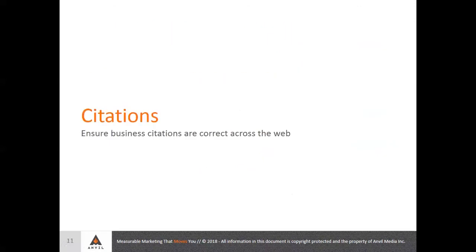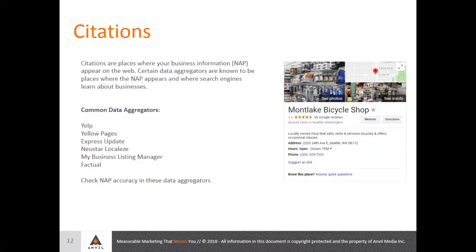Next we'll be talking about citations. So what is a citation? A citation is really anywhere on the web that includes your name, address, and phone number. This can be on your website or on another website. But mostly when we're thinking about citations, we're thinking about data aggregators. If you don't have a complete or up-to-date Google My Business listing, Google scrapes data aggregators and uses that information to present in a knowledge panel with regards to your business.